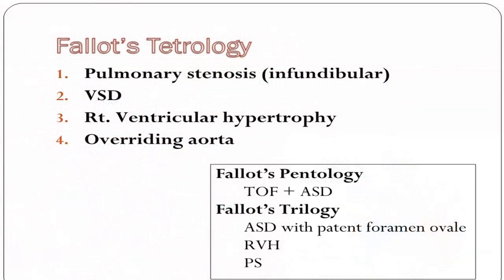Fallot's Tetralogy consists of infundibular pulmonary stenosis, ventricular septal defect, right ventricular hypertrophy, and overriding of aorta. If TOF is associated with ASD, we call it pentology. If there is ASD with RVH and pulmonary stenosis but no VSD, that is called trilogy. If VSD, ASD, pulmonary stenosis, RVH, and overriding of aorta are all present, it is pentology — TOF plus ASD.